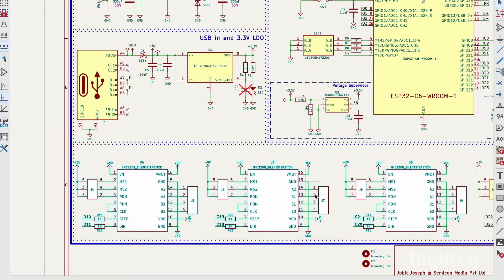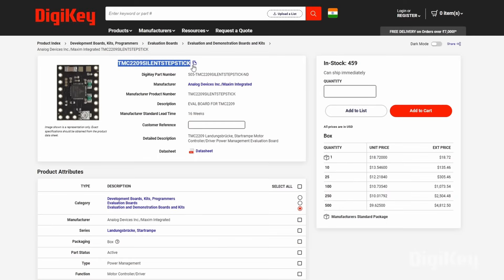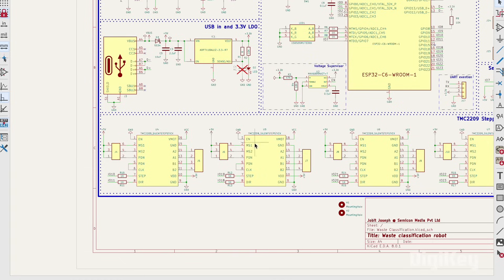Next, we have these three stepper motor driver modules, namely TMC2209 from Analog Devices, which are used to precisely control the stepper motors on our robotic arm.